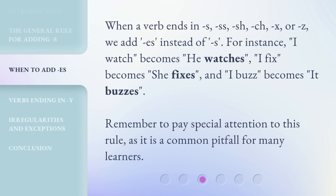When a verb ends in S, SS, SH, CH, X, or Z, we add ES instead of S. Remember to pay special attention to this rule, as it is a common pitfall for many learners.